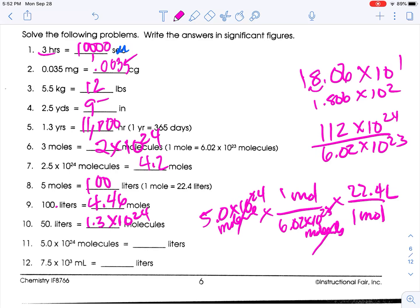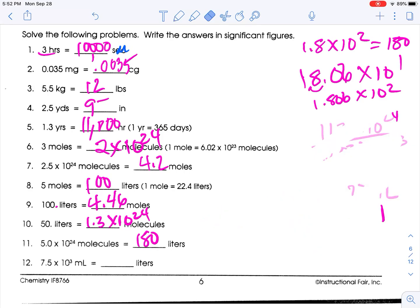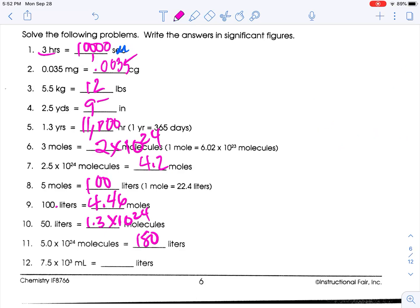Milliliters to liters. 7.5 times 10 to the 3rd milliliters. There are a thousand milliliters in one liter. So 7.5 times 10 to the 3rd, which is 7,500, divided by a thousand is 7.5, which is the same number of sig figs.